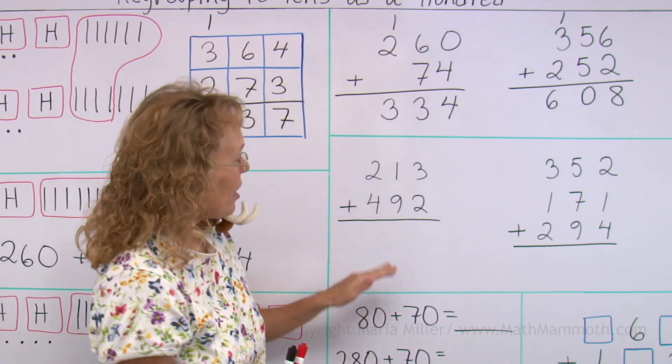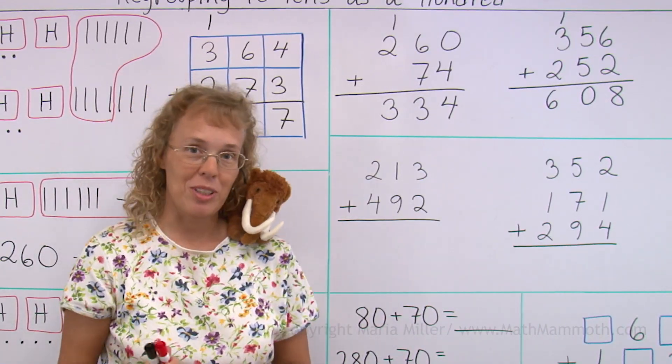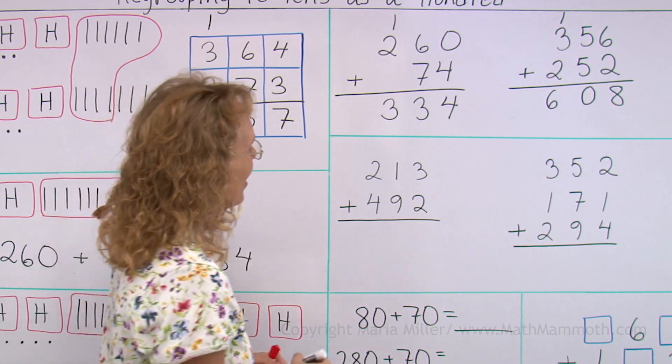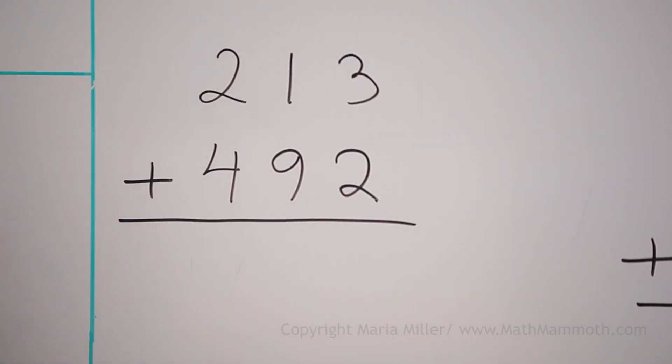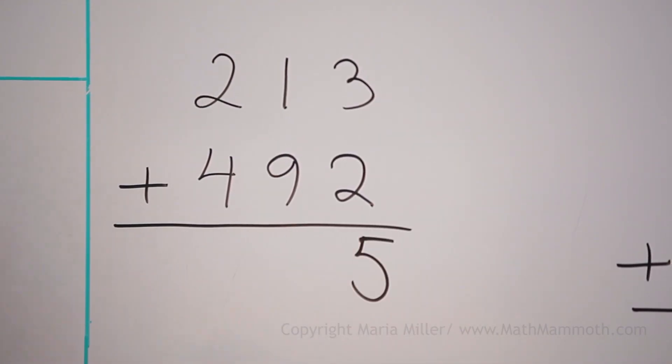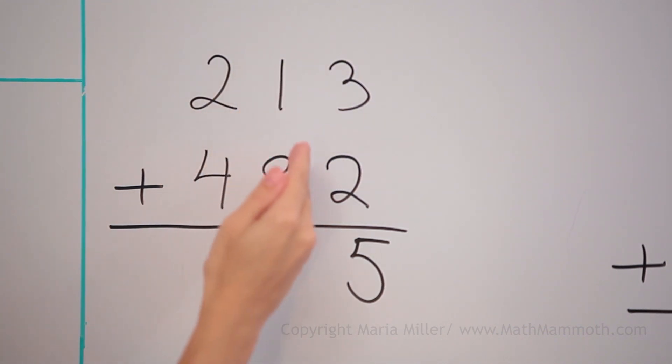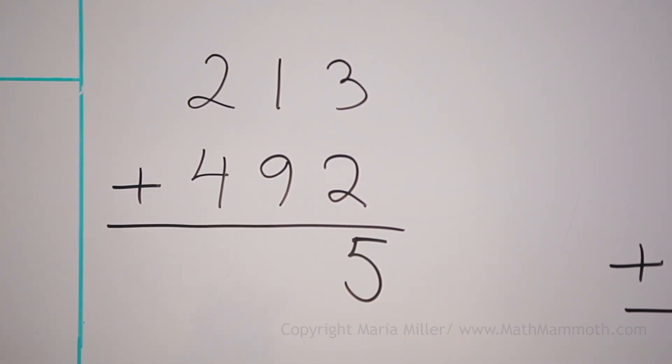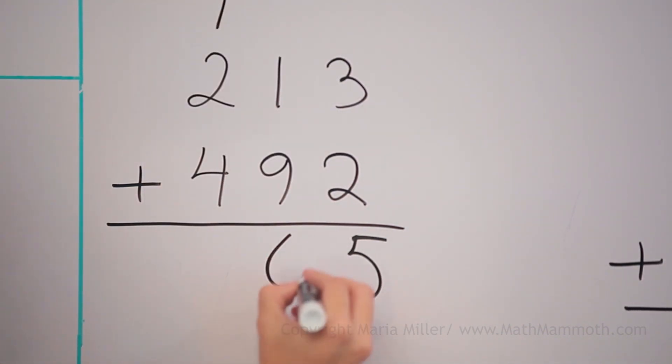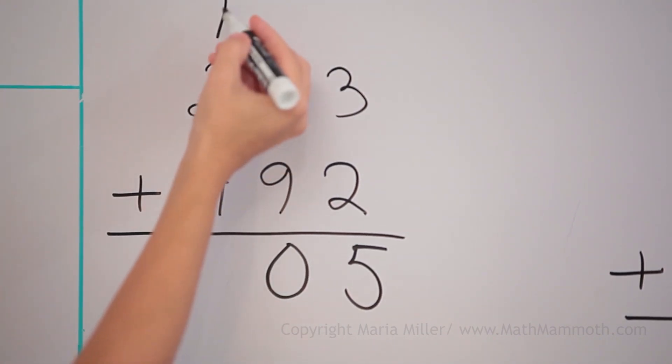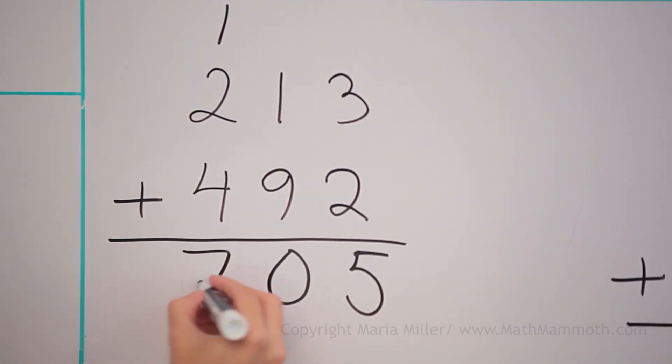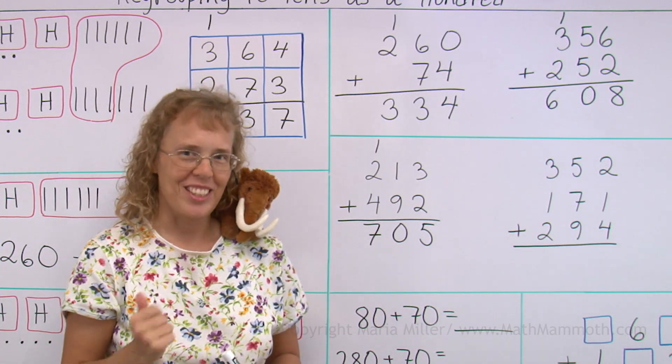Now let's try some addition problems without a visual model and see how it goes. First add the ones, we get five. Then the tens, one plus nine equals ten. So I write it as one here, zero here, regrouping. And then over here, one plus two plus four makes seven. Pretty easy, don't you think?